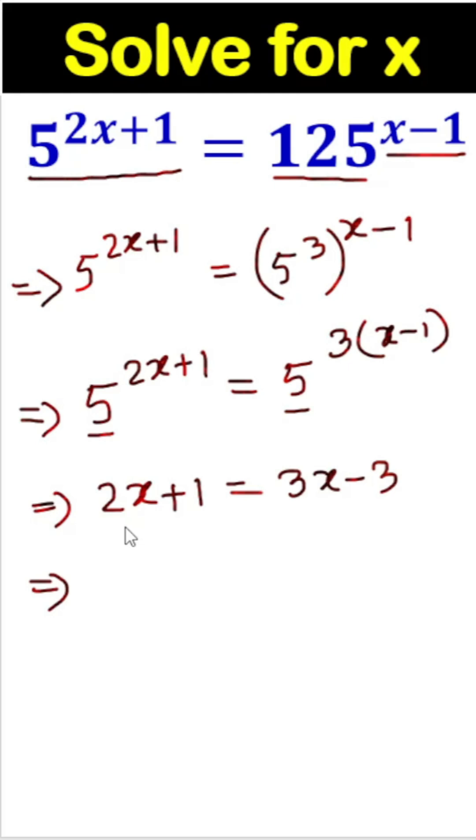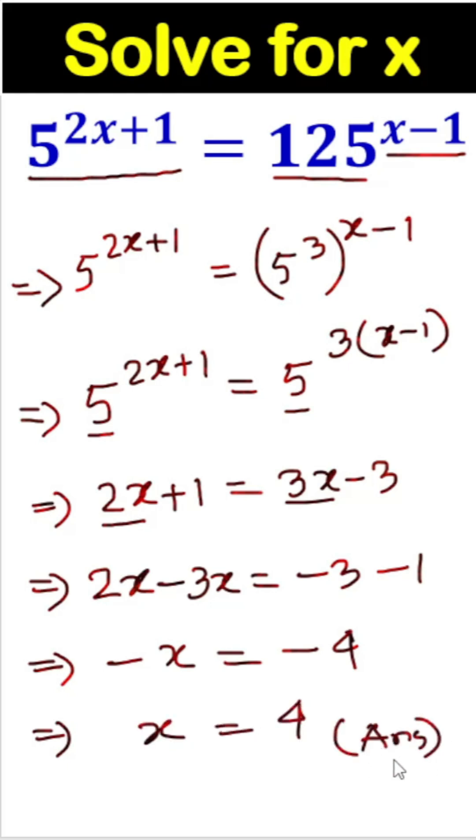Now, the variables 2x and 3x we can take to one side. It means 2x minus 3x equals, and minus 3 plus 1 will become minus 1. So minus x equals minus 4. Once we multiply both sides by minus 1, the result will be x equals 4. This is our answer. Thank you.